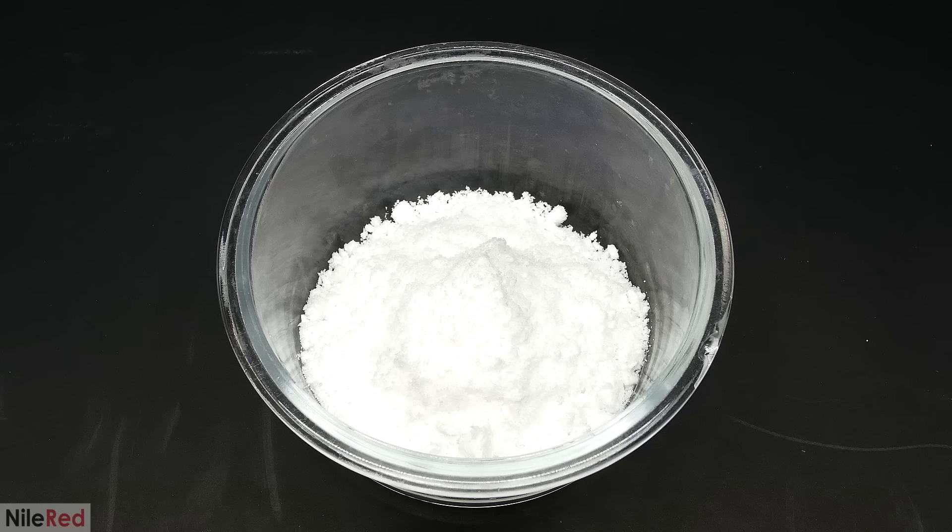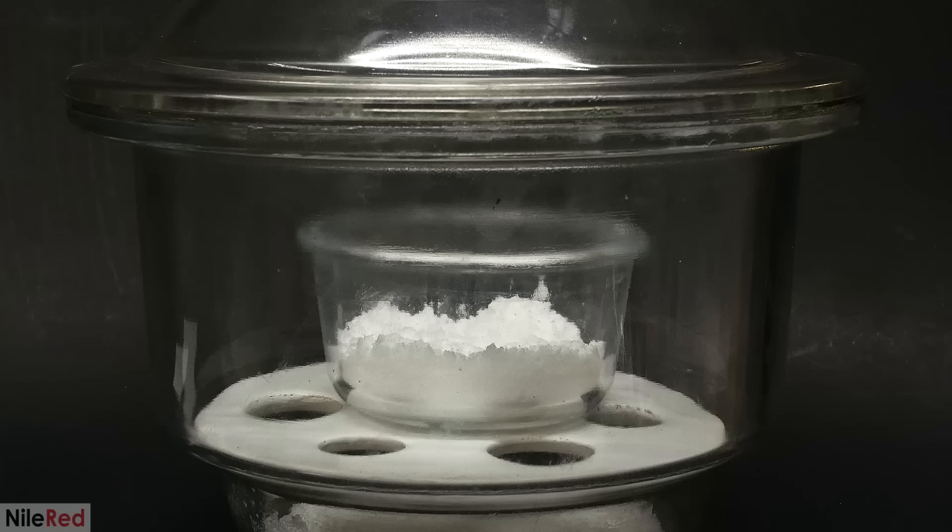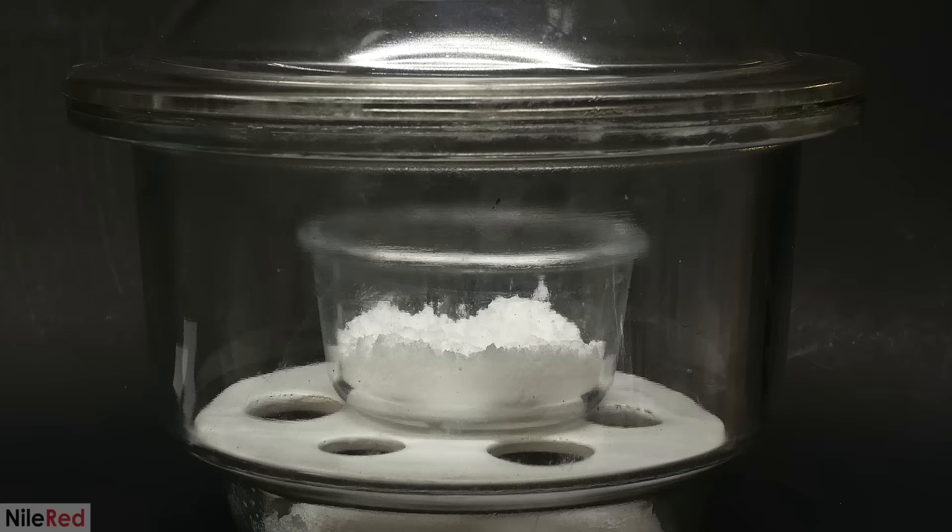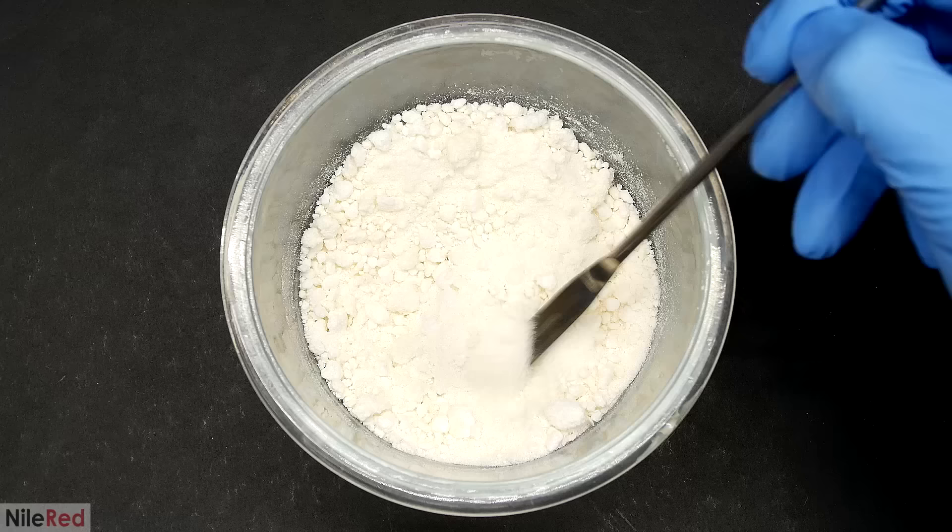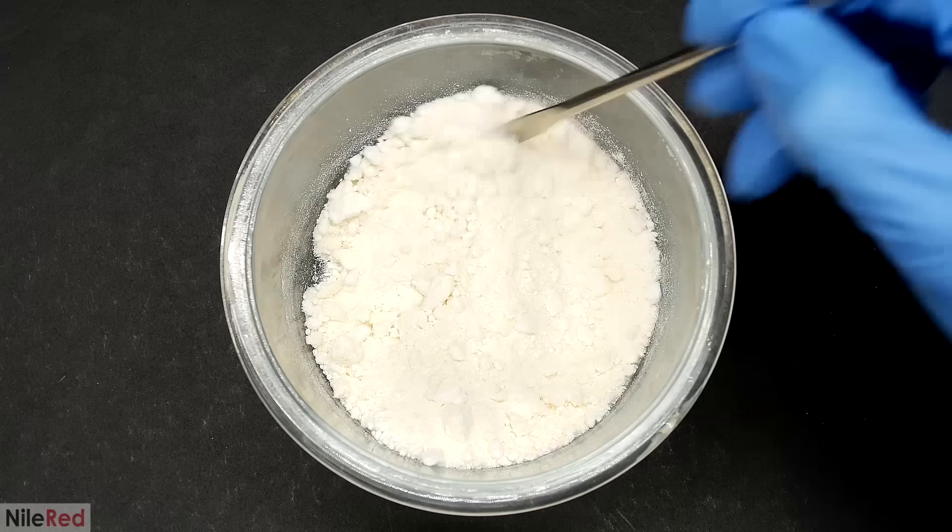Even after leaving it for something like 20 minutes on the filter, it was still a little bit wet with ethanol, so I threw it in my vacuum desiccator. I left it for about a day or so, and when I took it out, it was nice and dry, but for some reason, it had turned a little bit yellow. I'm not really sure why.